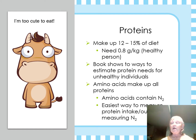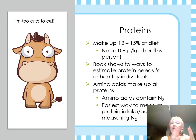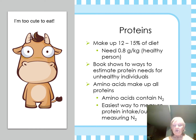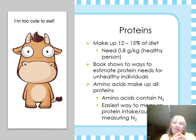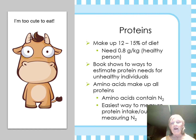Proteins make up about 12 to 15 percent of your diet. If you're a normal healthy person, you only need 0.8 grams per kilogram. For folks who are medically challenged — your patients with COPD — the book is going to tell you it's like 1.2 to 1.5 grams per kilogram for those folks. We can estimate through your nitrogen intake how much protein you're getting. Remember, all of your amino acids are made of proteins and they all contain nitrogen, and that's the easiest way for us to measure it.